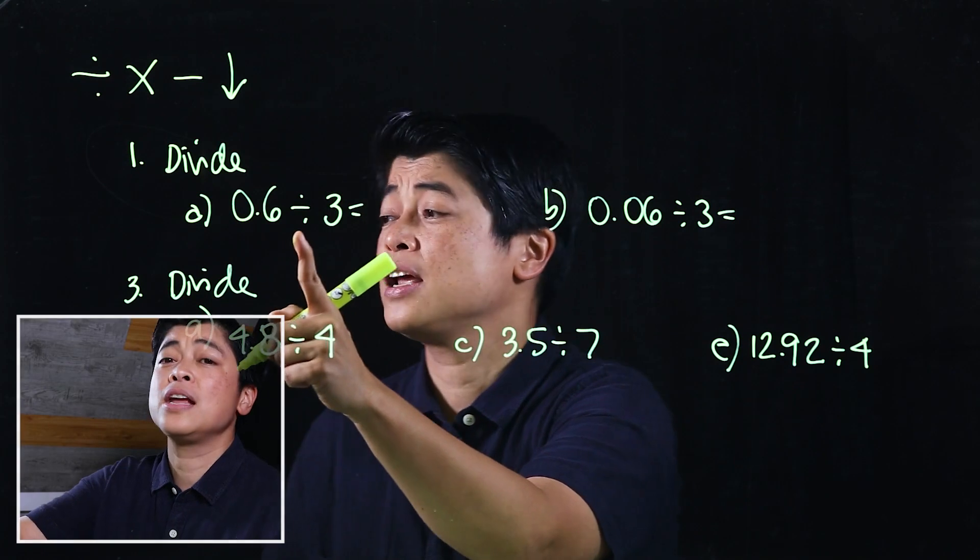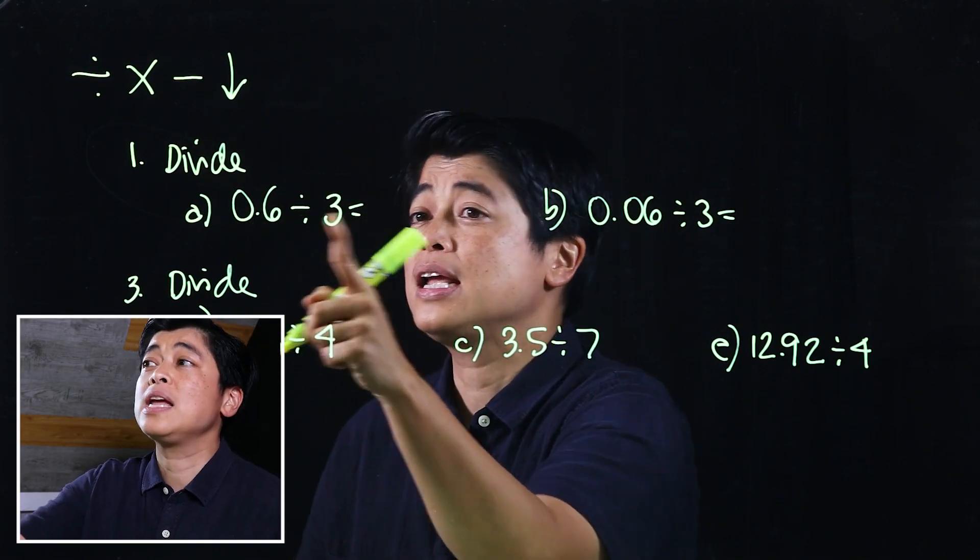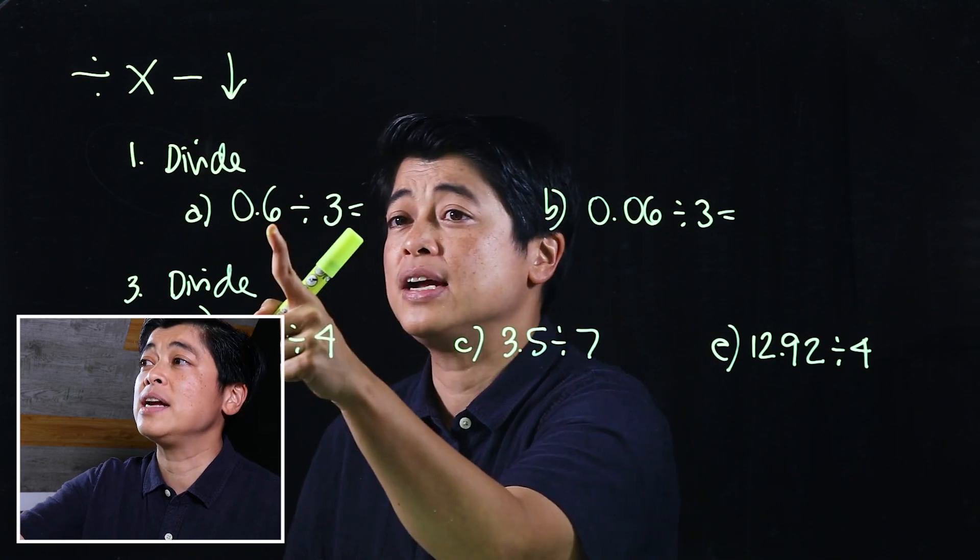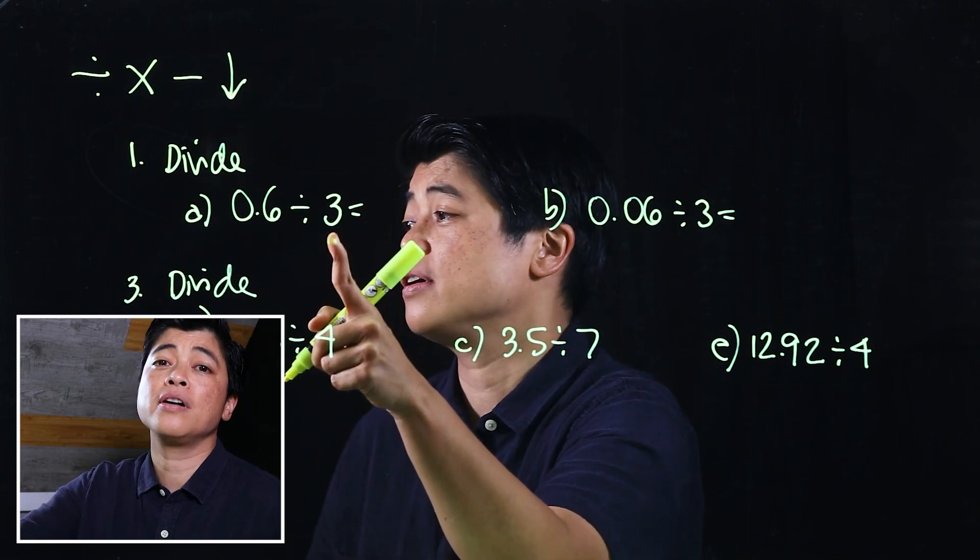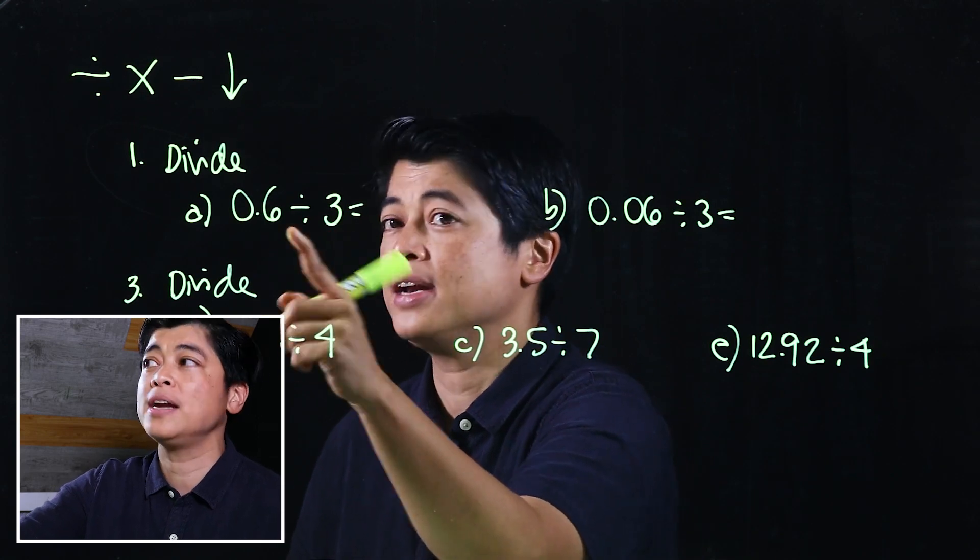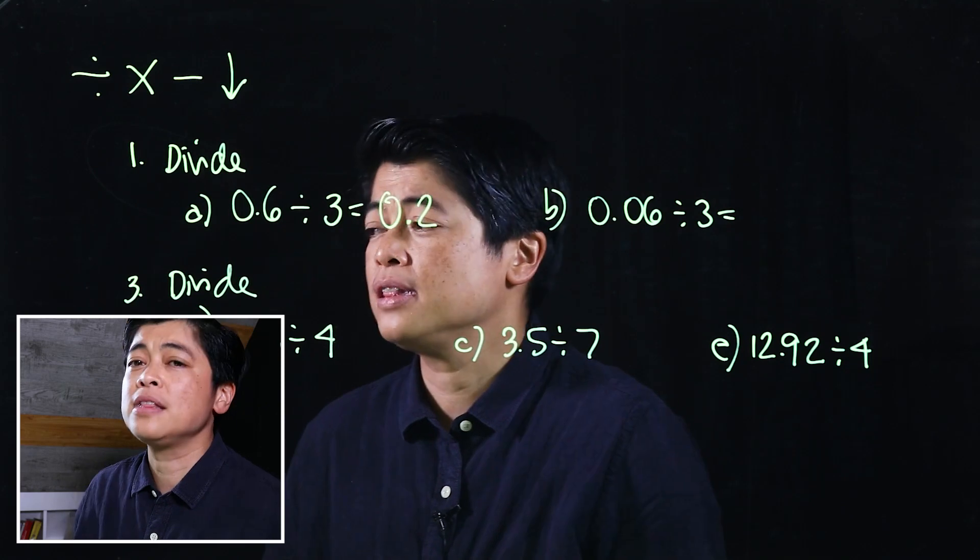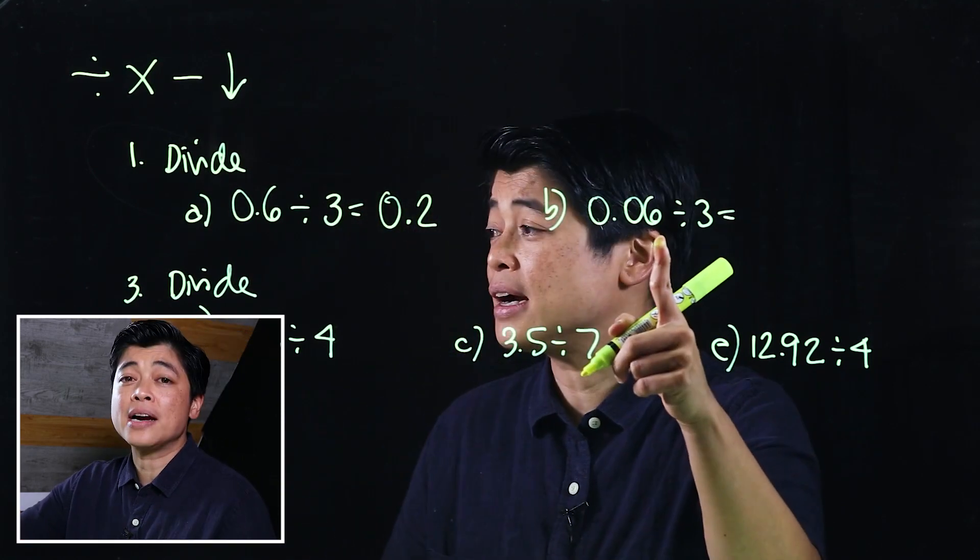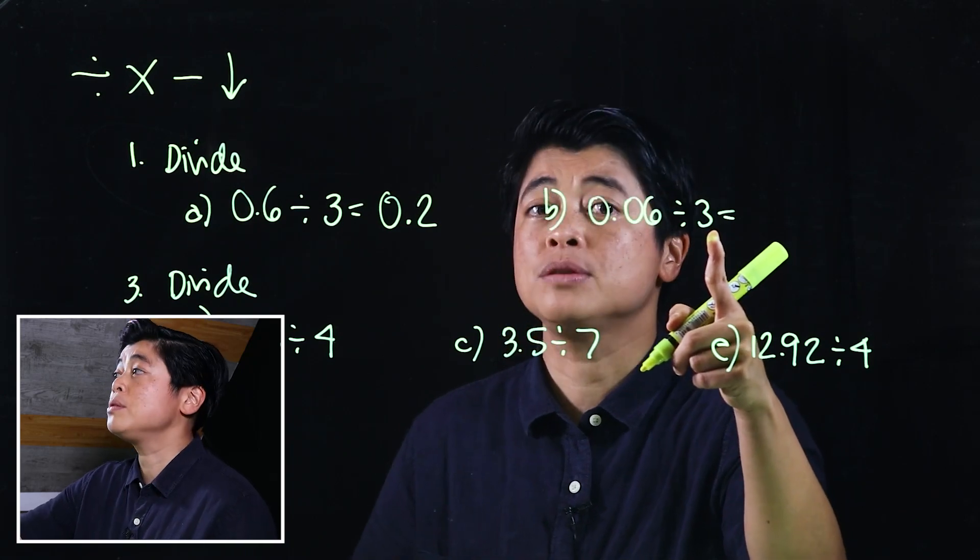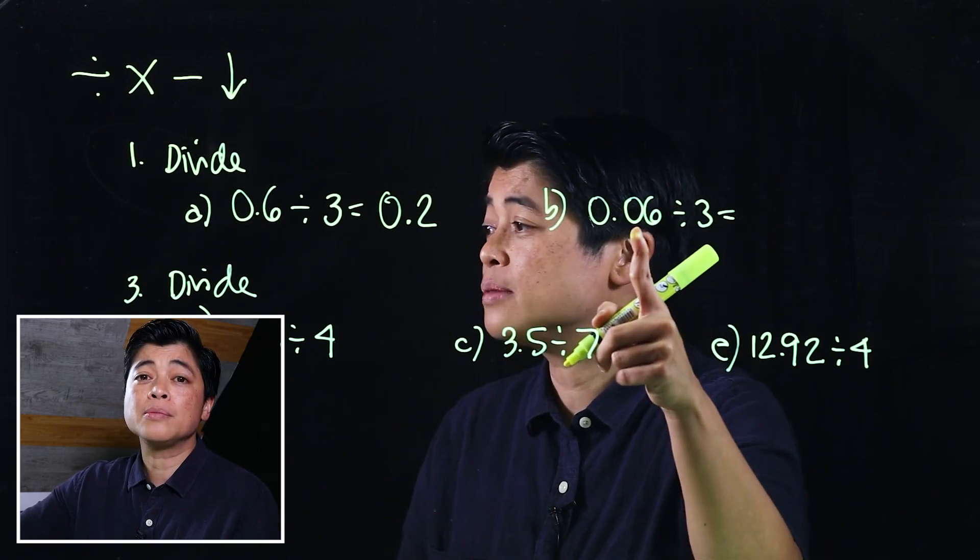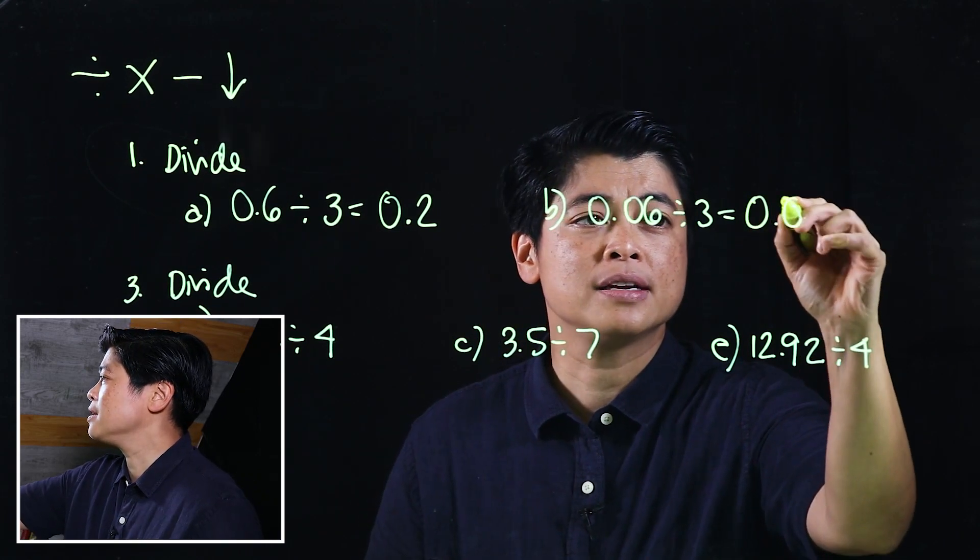Taking a look at these, I know that I can divide this mentally, so I'll keep it written as it is. I'll divide 6 divided by 3 is 2. Then I count that number of place values, which is 1, so that means my answer must be 0.2. Doing the same here, if I divide 6 divided by 3, that will be 2. Counting the number of decimal places, which is 2, makes this 0.02.